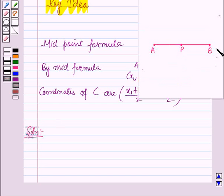In the question it is given that P is the midpoint of the line segment AB where the coordinates of A are (6,-5), coordinates of B are (-2,11), and coordinates of P are (2,P).